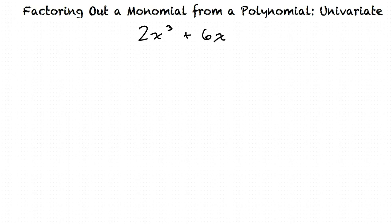Let's work out this problem. When factoring, our goal is to find the greatest common factor of each term. In this case, our first term is 2x³ and our second term is 6x.